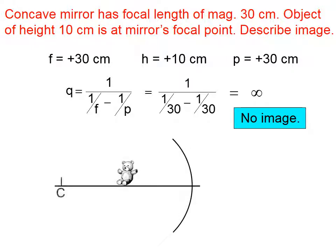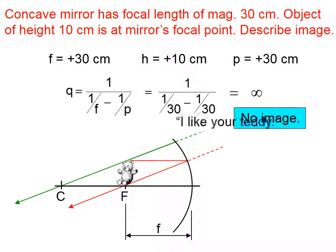So if we have an object that's at the focal point, rule number one says go parallel to the principal axis, then bounce back through the focal point. Rule number two falls away. Rule number three says line up the top of the object with the center of curvature, head towards the mirror, and when you hit the mirror, go back along that line. You can see that there will be no image in this case.